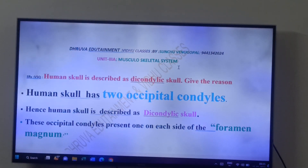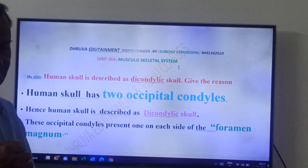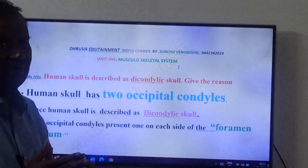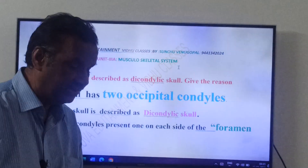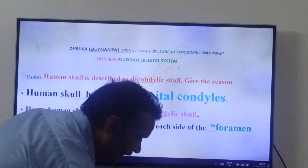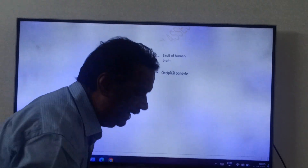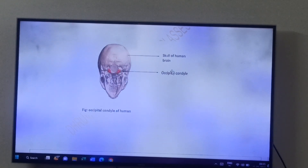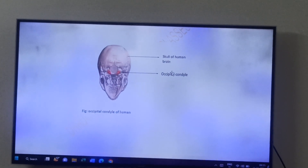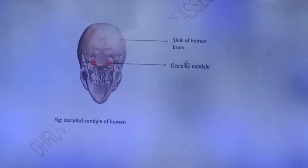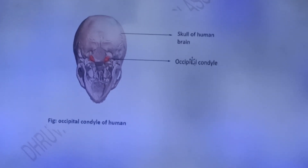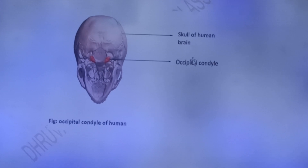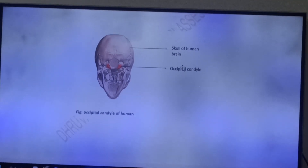But in Amphibians and Mammals, the skull has two Occipital Condyles. If a skull has two Occipital Condyles, that is a Dicondylic skull. So the Mammalian skull has two Occipital Condyles. Once you see the image you will get an idea — here we have two Occipital Condyles, the reddish ones. Because of that, the human skull is called a Dicondylic skull.